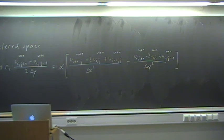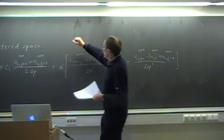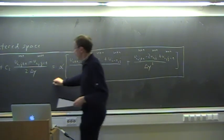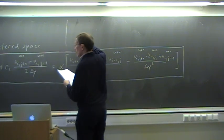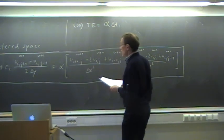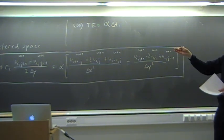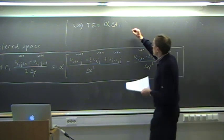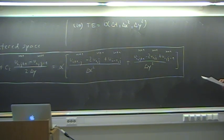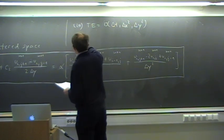That is then equal to the diffusion terms, also taken at the new time level: the diffusion coefficient alpha times the discretization of the second derivative in the x-direction, all at the new time level. Likewise in the y-direction: U_{i,j+1} minus 2U_{ij} plus U_{i,j-1} divided by delta y-squared, all at the new time level. That is the scheme. Regarding accuracy, it is similar to the forward time-centered space — first order in time.